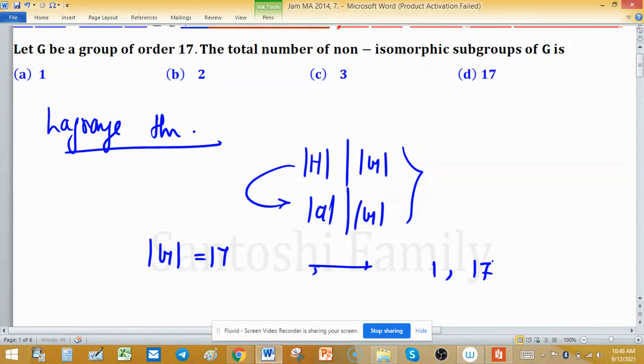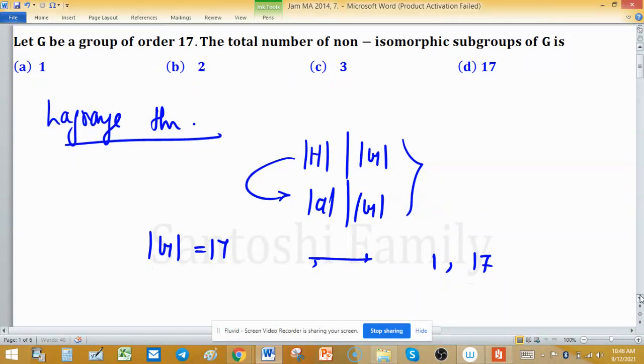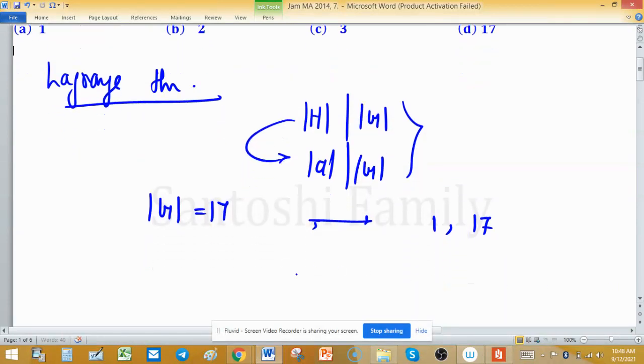So the subgroup order will be either 1 or 17. Therefore, the total number of non-isomorphic subgroups are 2.